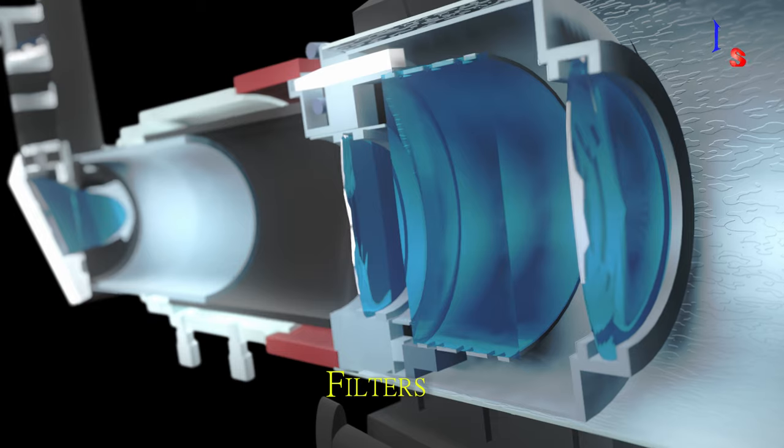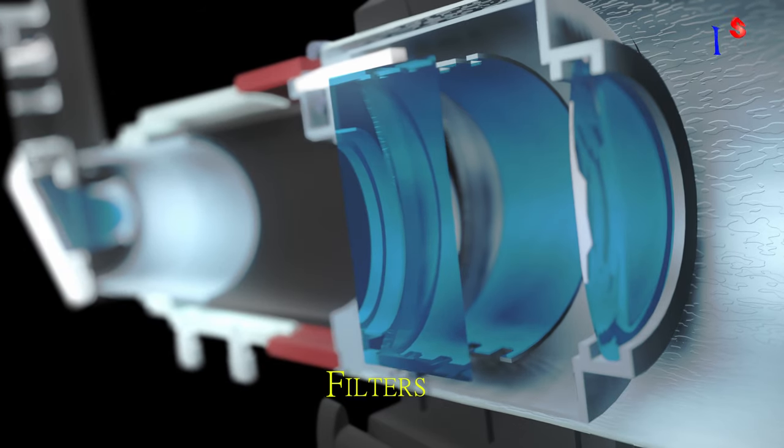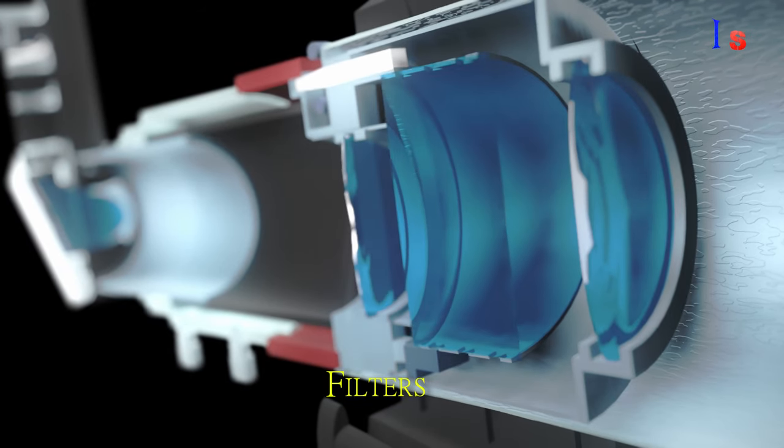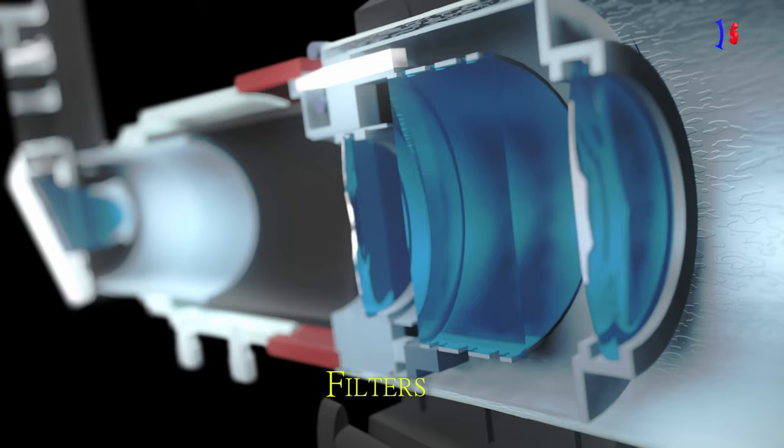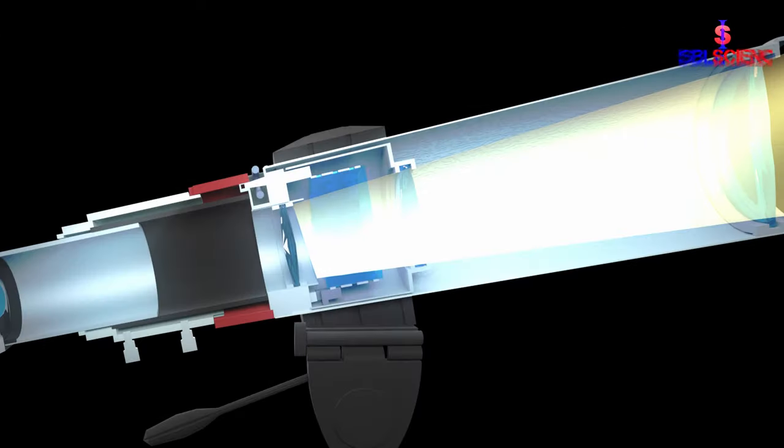Telescopes may use a variety of filters to get a specific wavelength of light. Next lens refocus the light after it has passed through the filters.